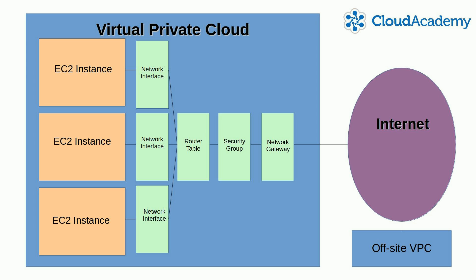AWS VPCs are also fully integrated with all other AWS services. So whether you're using S3 storage, EC2 instances, or database services through RDS, you can easily move data and connectivity between any of them through your VPC to any other part of the VPC.